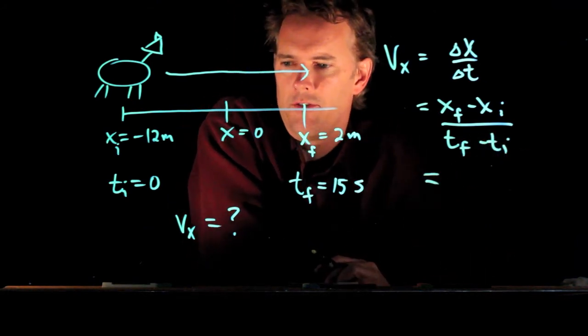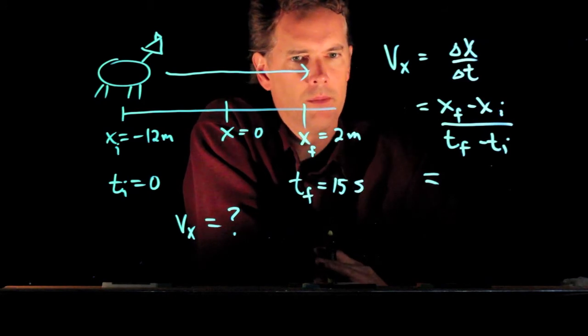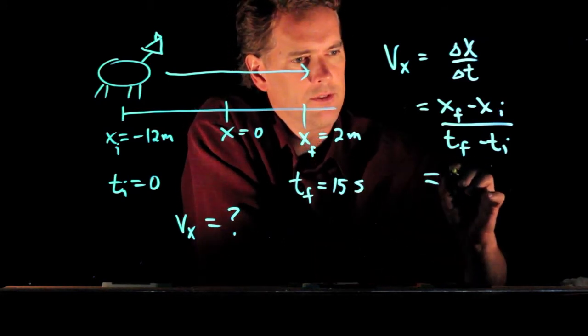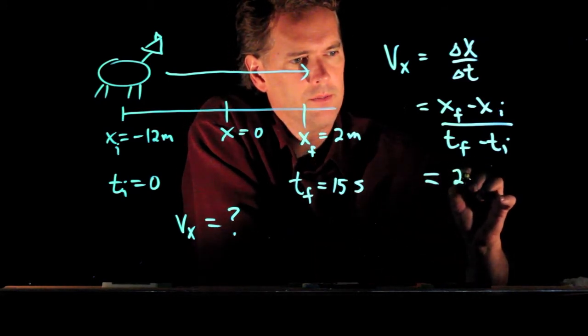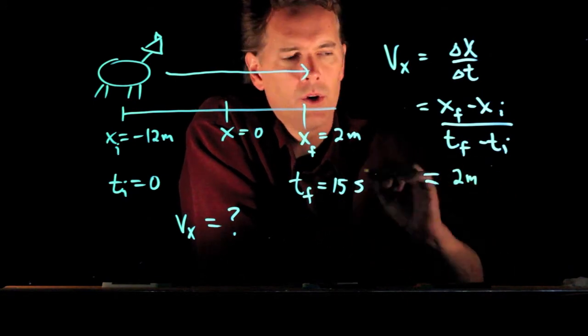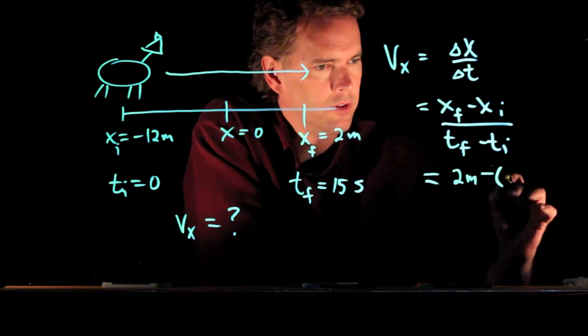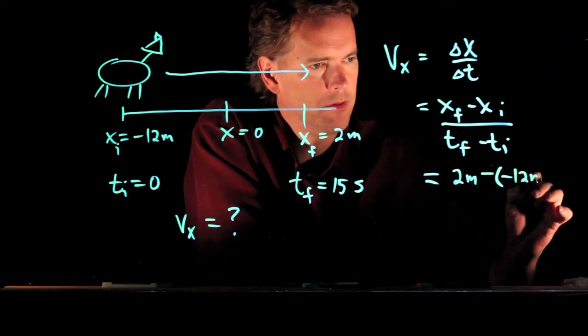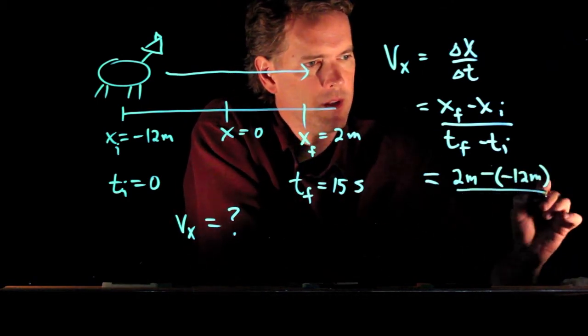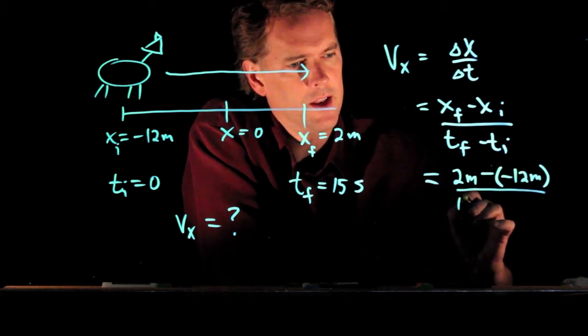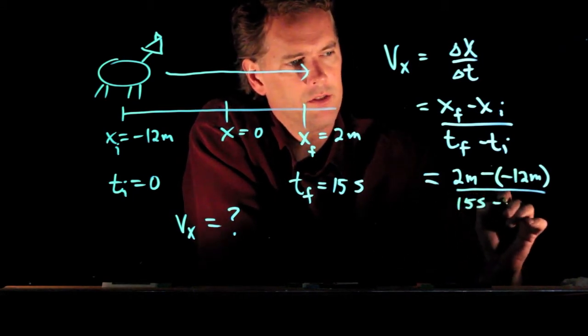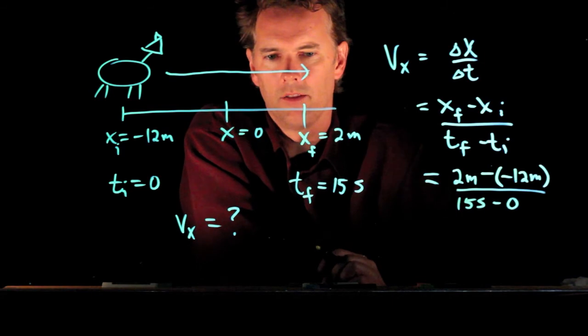And now we have all of those numbers, right? x final is 2 meters. We're going to subtract x initial, which is negative 12 meters. T final we said was 15 seconds. T initial is 0.